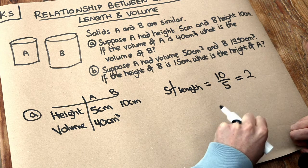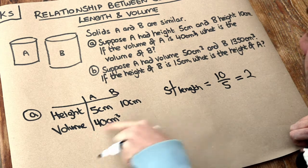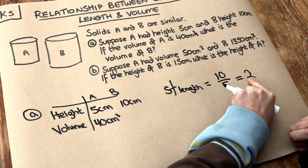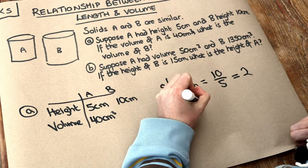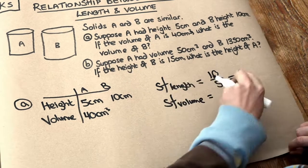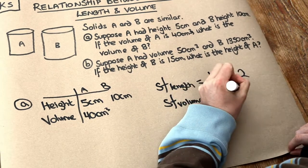Now you might be able to guess that therefore to find the scale factor of volume, you take the scale factor of length and you cube it. So the scale factor of volume from solid A to solid B is that 2 cubed and we get 8.